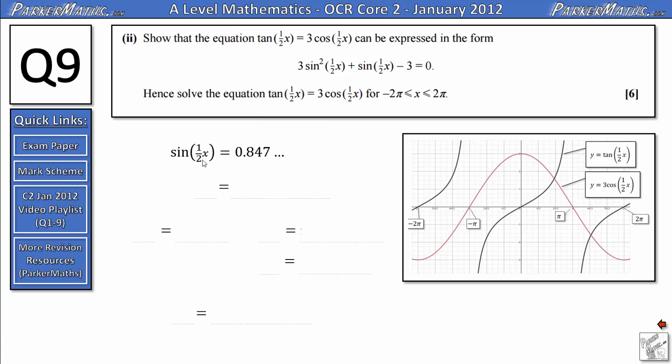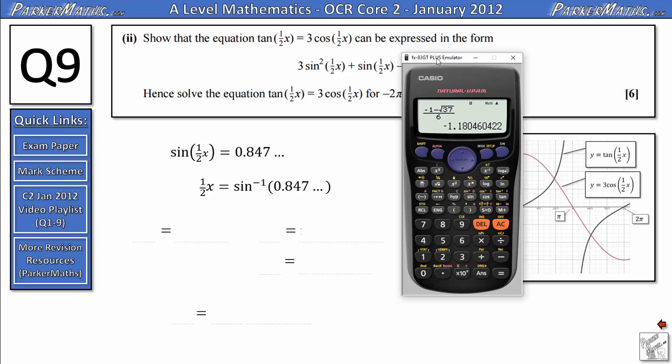So at this stage, I've got sin(x/2) = 0.847. To solve for x/2, all I need to do is inverse sin of the right-hand side. Fortunately, I've got this value stored in my calculator as A. So I'm making sure my calculator is in radians, I do inverse sin of A—and I get that by pressing the alpha button—and that gives me 1.01 and so on. Once again, I might need this answer later, so I'm going to store that in my calculator, this time as B.